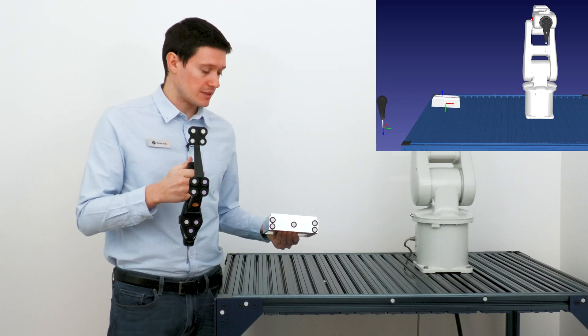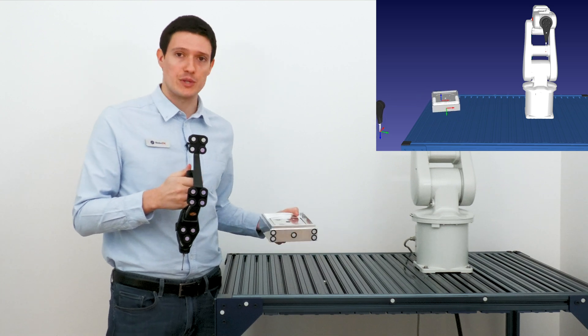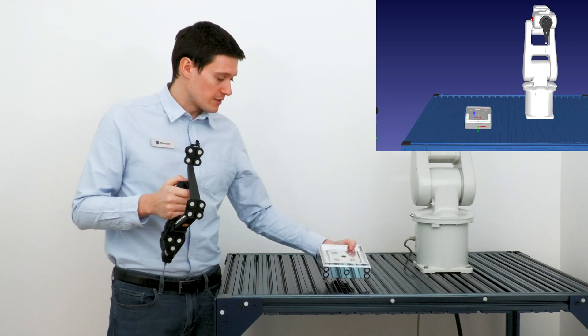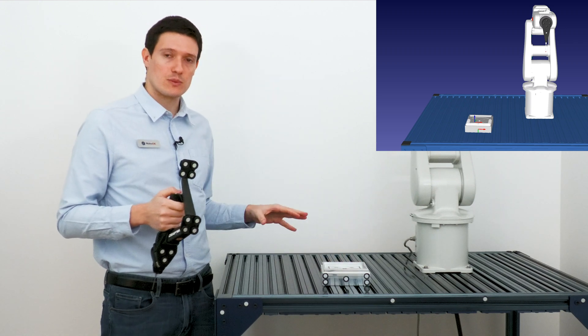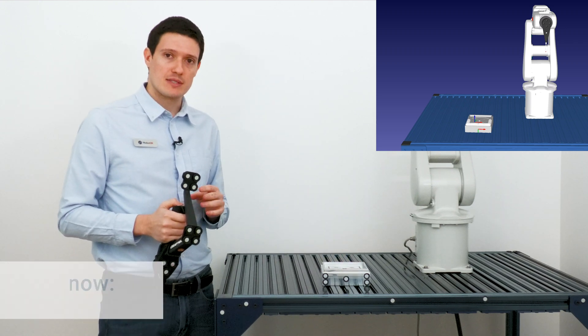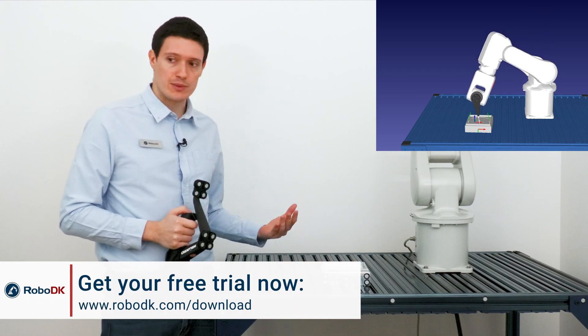Once we have a path, we can see a cloud of points attached to the part. To convert that into a program, we can just place the part somewhere in the robot workspace, press the second button of the probe, and that will be converted into a robot program.